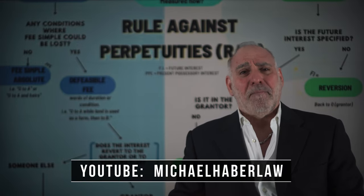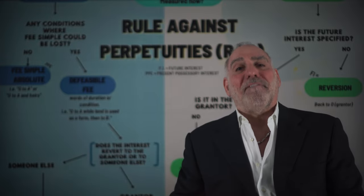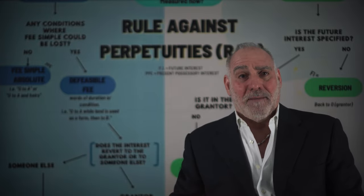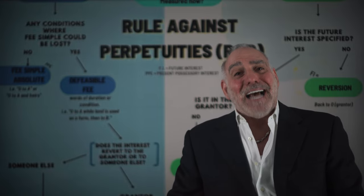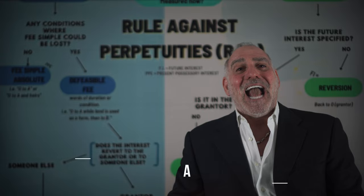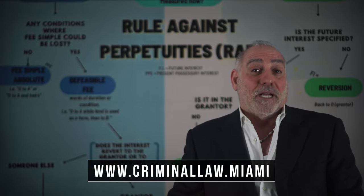When something, anything, exists in perpetuity, then it is forever. It is for all time. And as a shout out to my real property professor, it passes from generation to generation endlessly and for eternity, ergo the need for a rule against perpetuities.